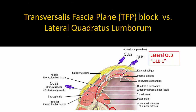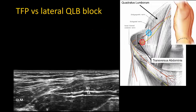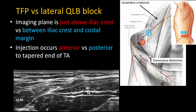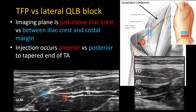A question that is often asked is: how does the TFP block differ from the lateral quadratus lumborum block? On the surface they are both very similar, both being performed where the transversus abdominis muscle tapers off into the thoracolumbar fascia. However, there are subtle differences. In the TFP block, the probe is kept low and close to the iliac crest rather than higher and closer to the costal margin. Additionally, the injection is performed anterior to the tapered end of transversus abdominis rather than posterior to it. Passing through the transversus abdominis muscle makes it easier to distinguish between an injection that is too shallow and distends the muscle versus injection in the correct plane that creates a pocket under the muscle fascia.